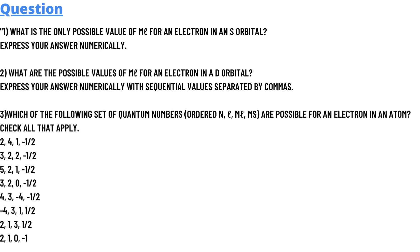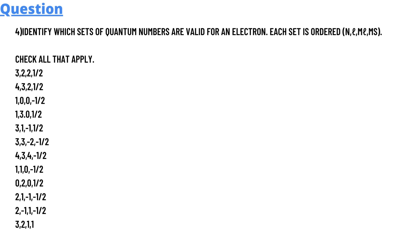Option three: Which of the following sets of quantum numbers ordered n, l, m_l, m_s are possible for an electron in an atom? Check all that apply. The formulas are given below. Option four: Identify which sets of quantum numbers are valid for an electron. Each set is ordered n, l, m_l, m_s. The formulas are given below.